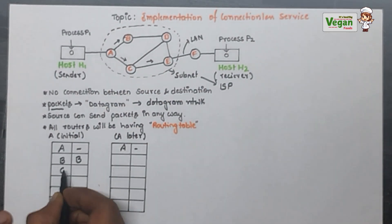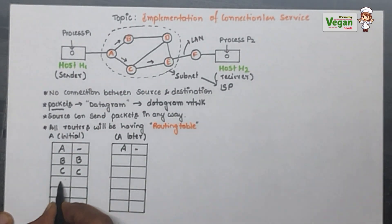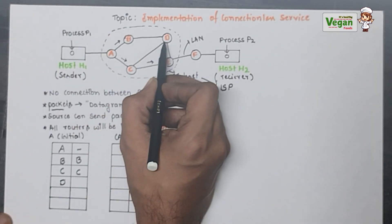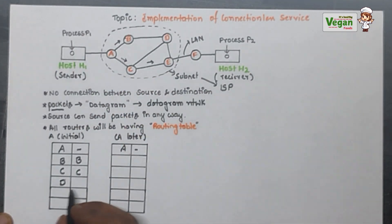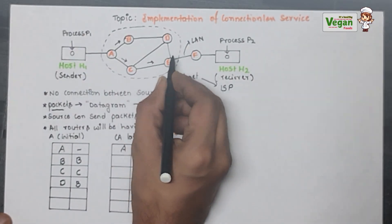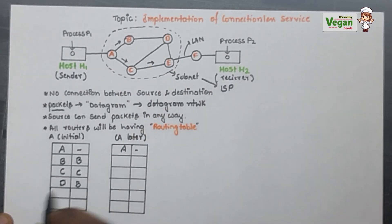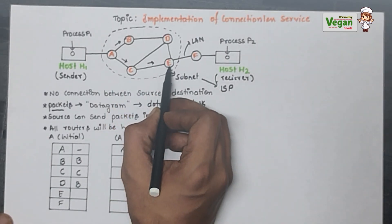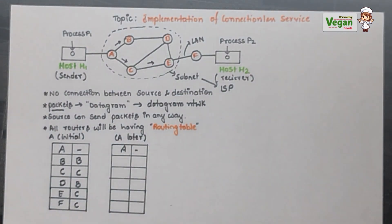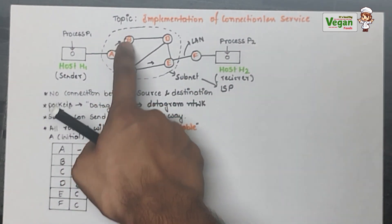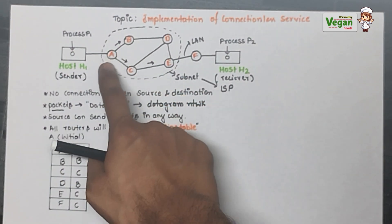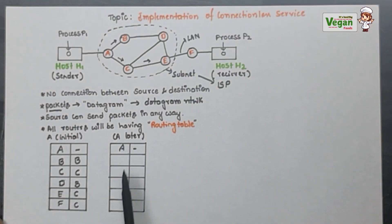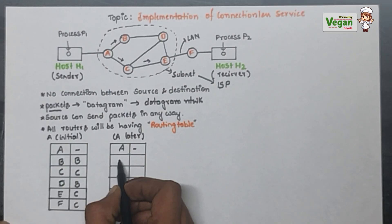To C, it will go through C itself. Now for D, the shortest path could go through C then to D, or through B then to D. Let's consider it will go through B and then to D. For E and F, using C it goes to E and F. We represent only the nearest neighbor of A — meaning which nearest router A uses to forward. So we represent that next-hop router here.